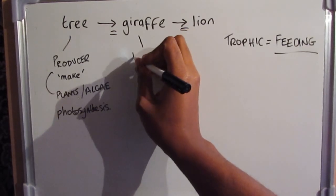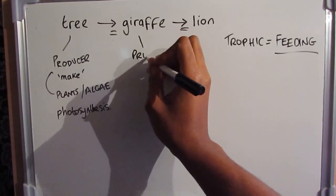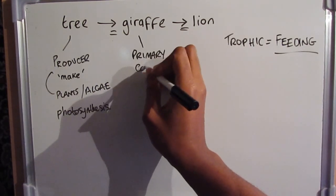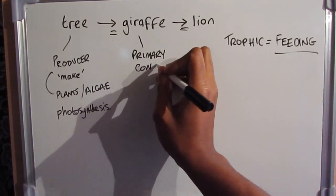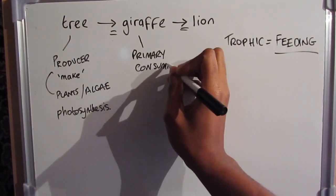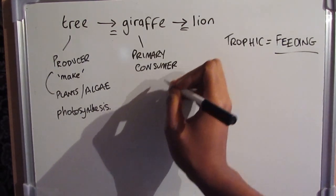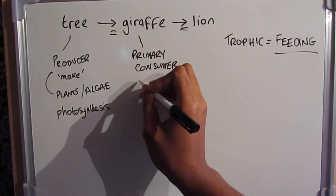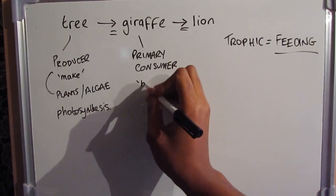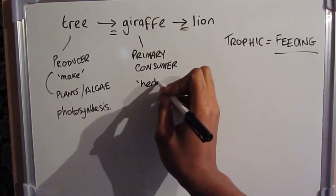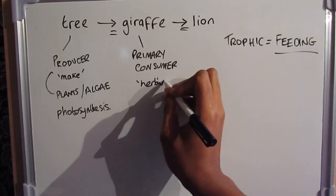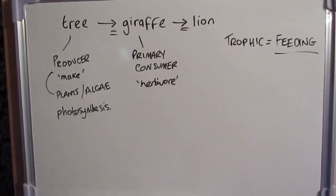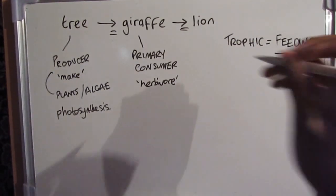The giraffe eats the tree, so we call it the primary consumer — the first organism that eats another organism. Because the giraffe only eats producers or plants, we also call it a herbivore, meaning animals that only eat plants.